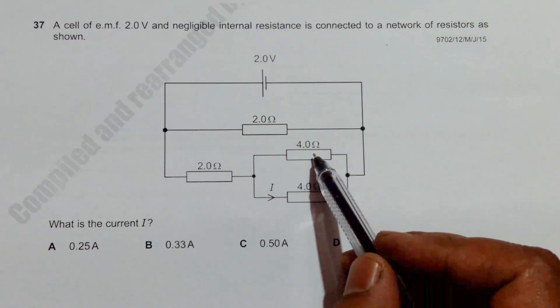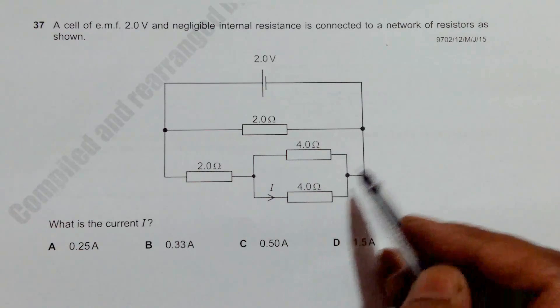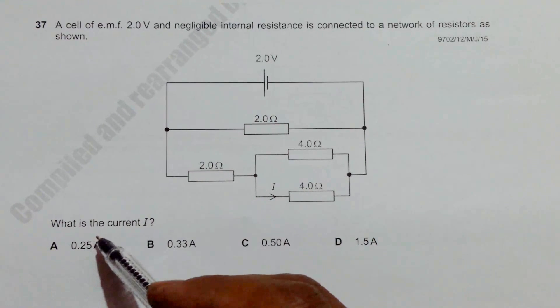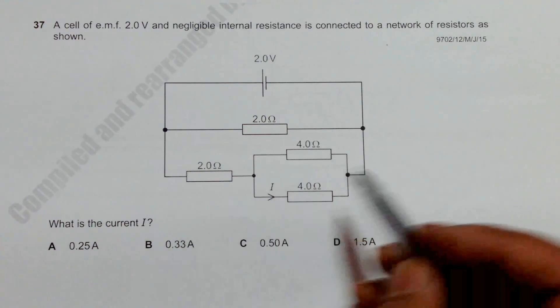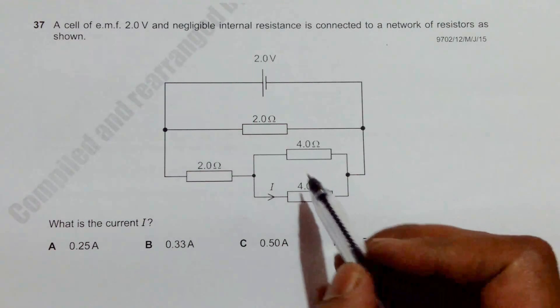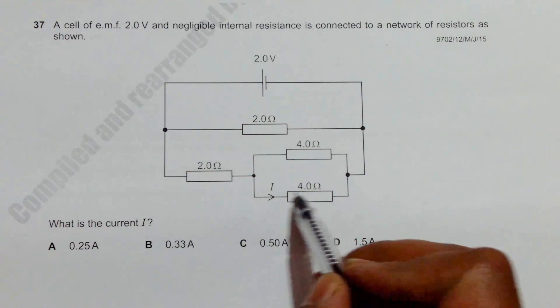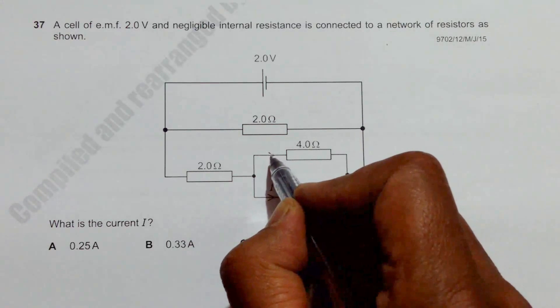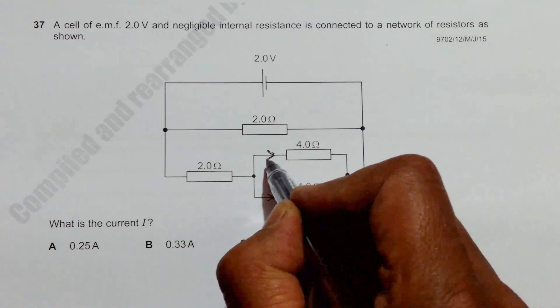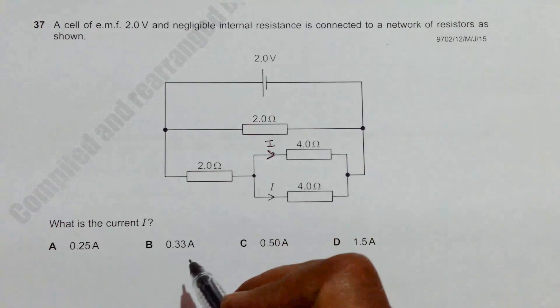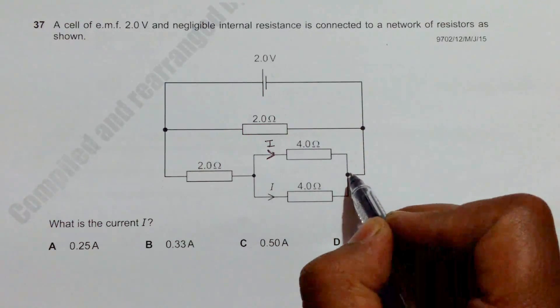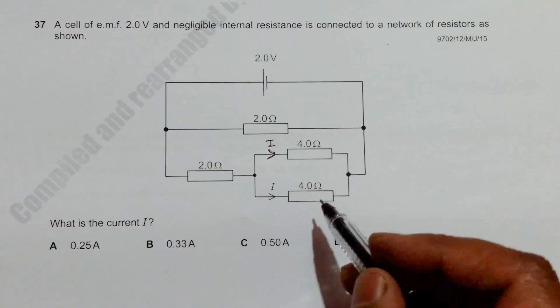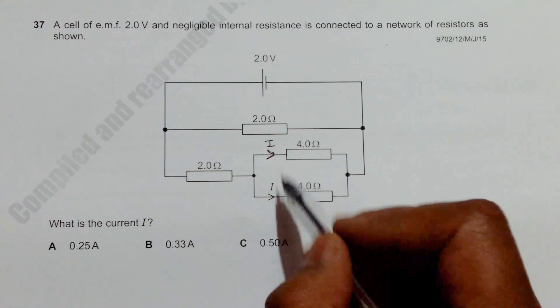These two 4 ohm resistors are in parallel and there is current I here, so we have to find the value of current I. Let us remember that if it is current I through this 4 ohm resistor, the current here should also be equal to I because the potential difference is same and if the resistances are the same, the current should also be the same.